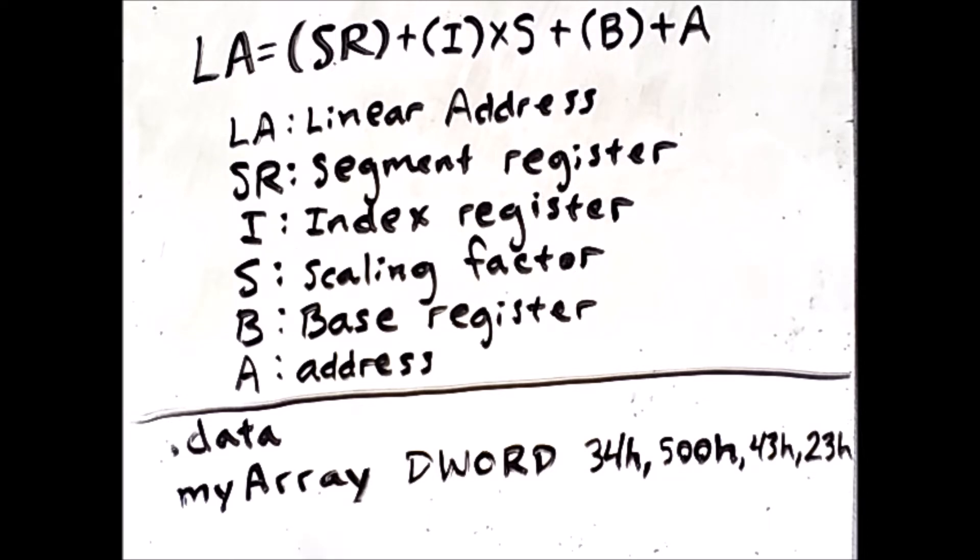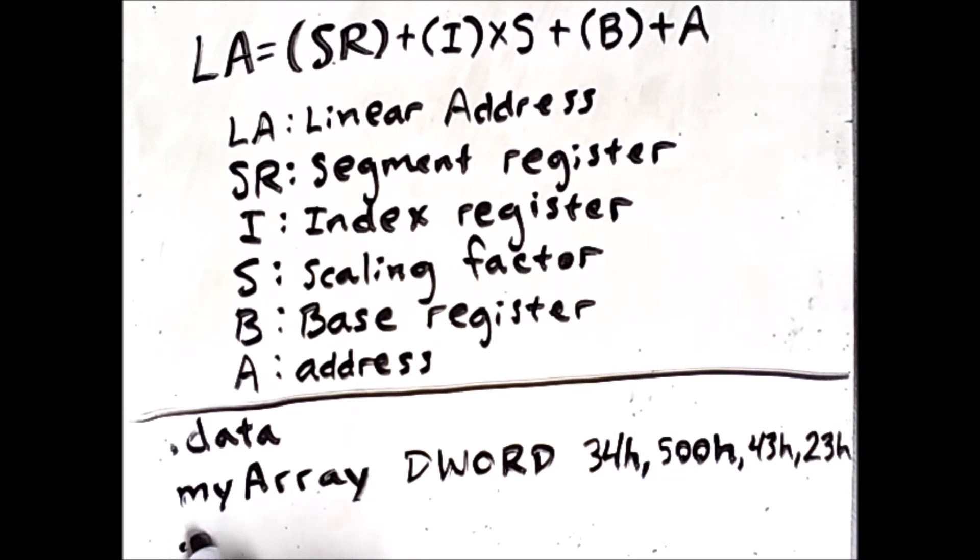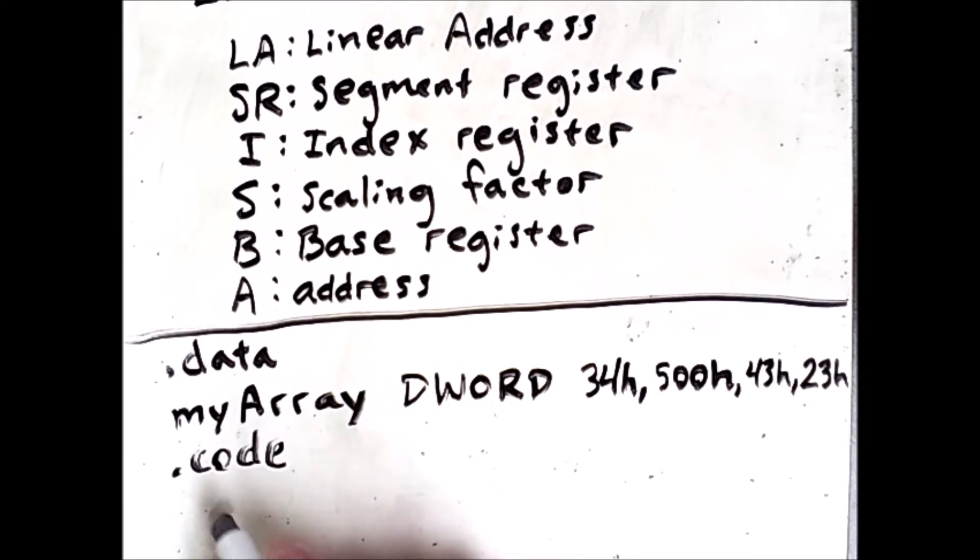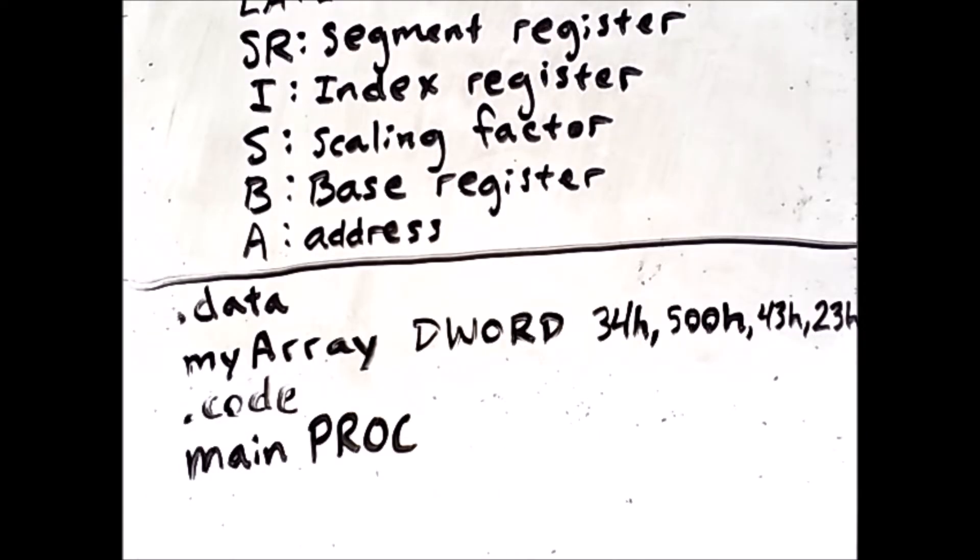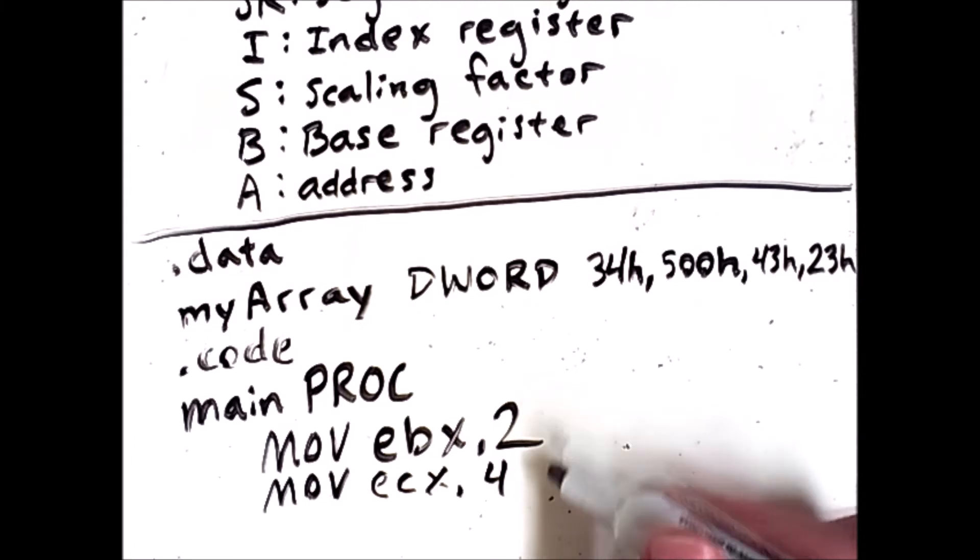And then after this, I'll start my code segment, and I'll put this inside of a main procedure. And in order for this example to make sense, I'm going to have to put some values into certain registers just to set things up. So I have these two commands. I've put 2 into EBX and 4 into ECX. I have not yet used the base with scaled index and displacement addressing approach yet. Here it comes now.